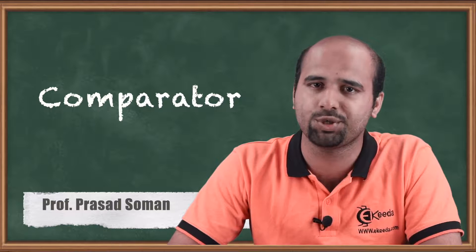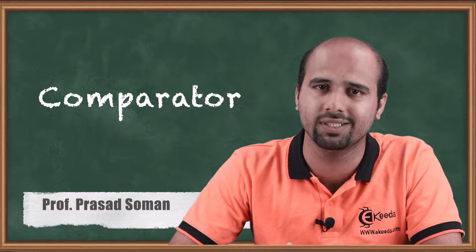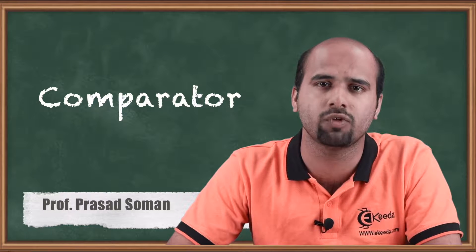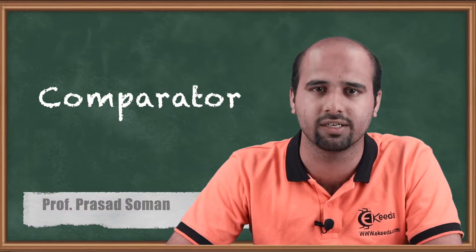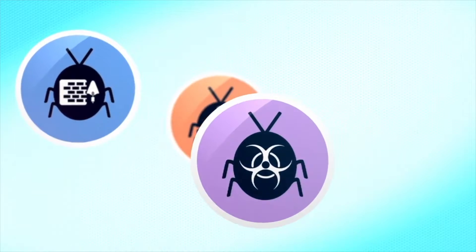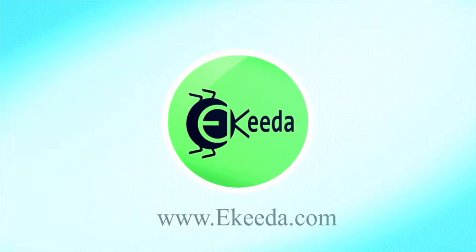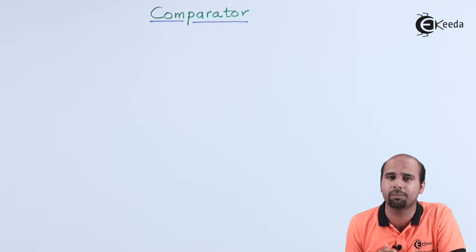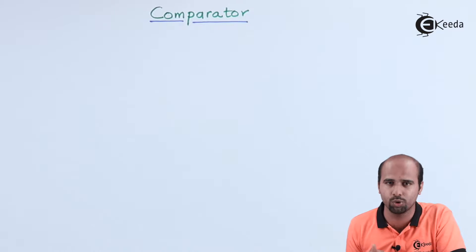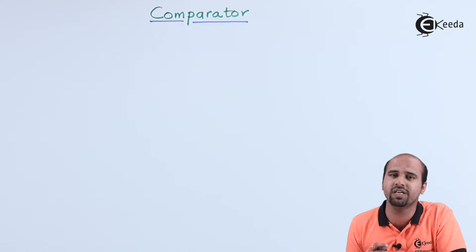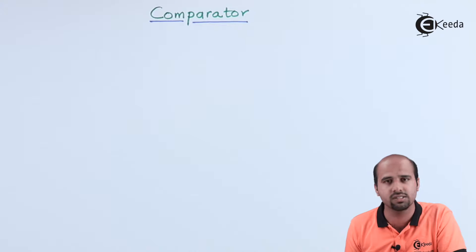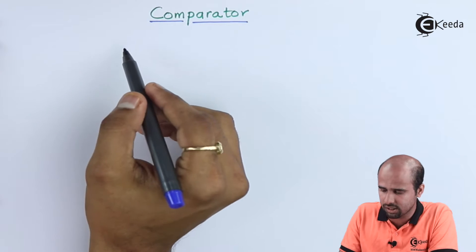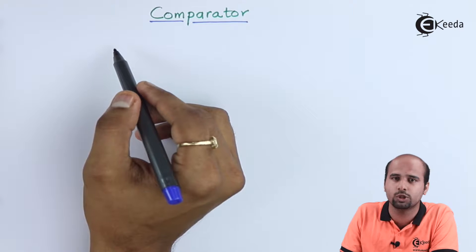Hello friends. In this video session we will start a new topic called the Open Loop Configuration of Operational Amplifier, also known as the Comparator. The word Comparator tells us that we want to do a comparison between two input signals and give that comparative analysis to the output node so we can determine which one is greater and which one is lesser. We will look at the Comparator circuit with an Operational Amplifier configured in Open Loop Configuration.